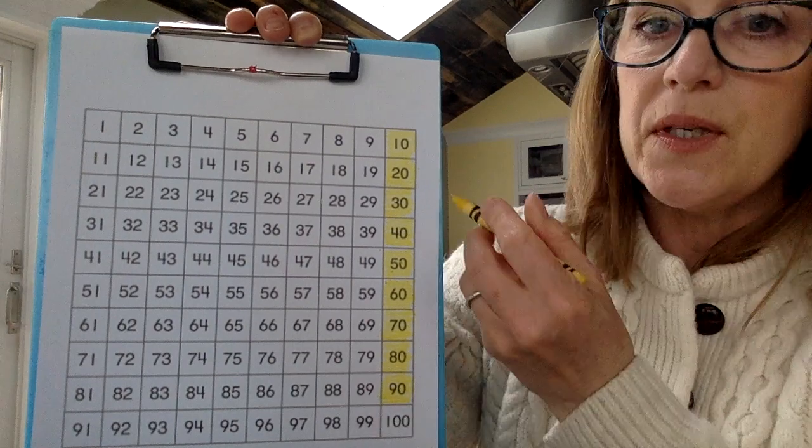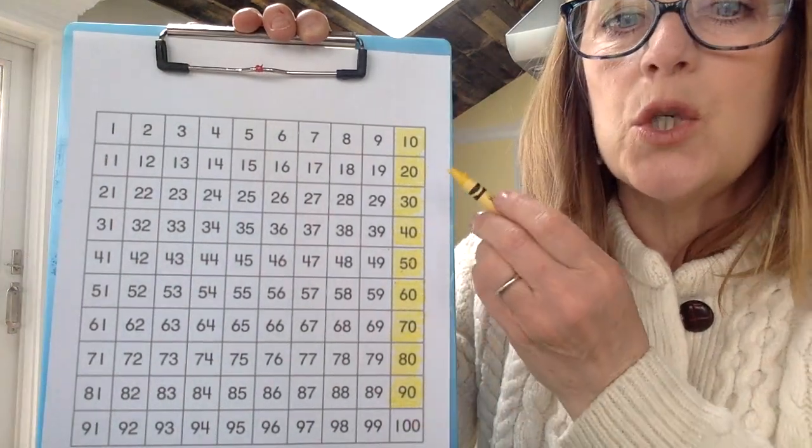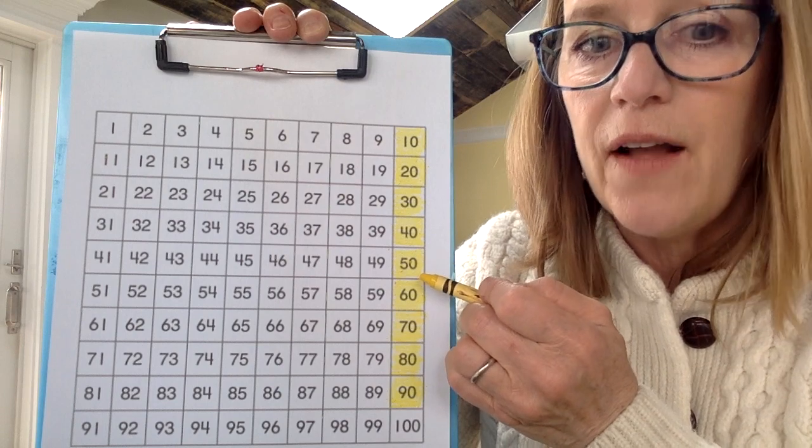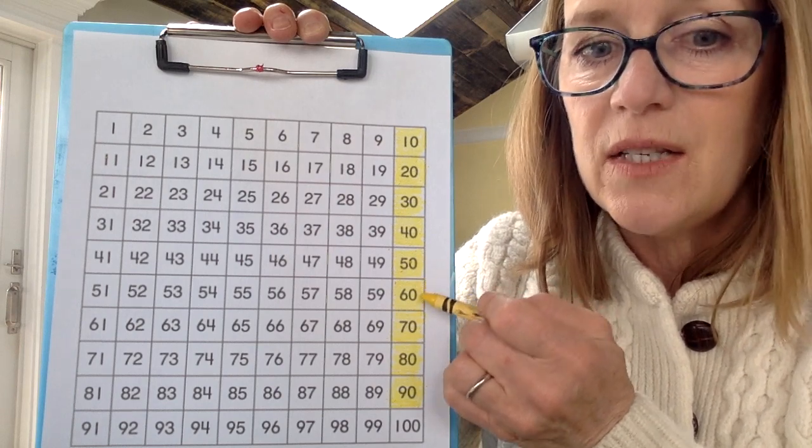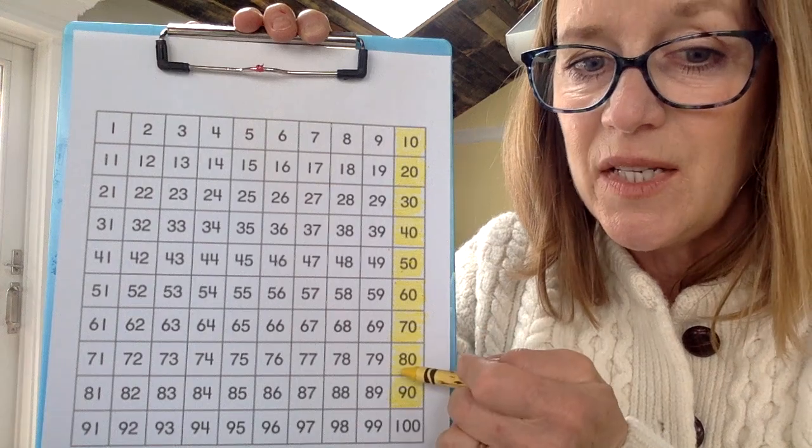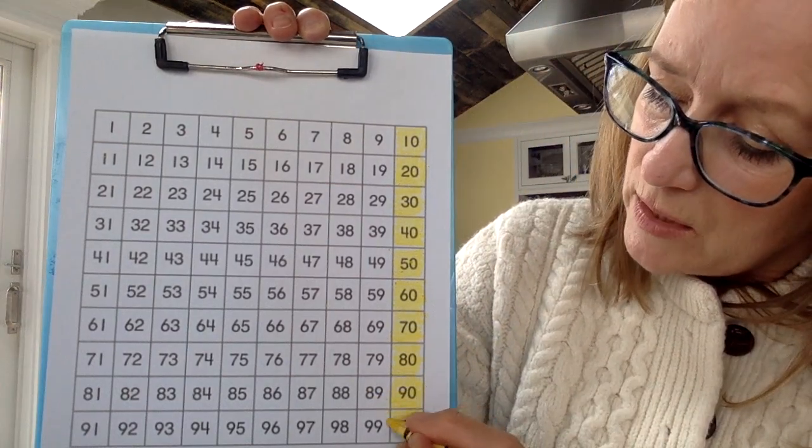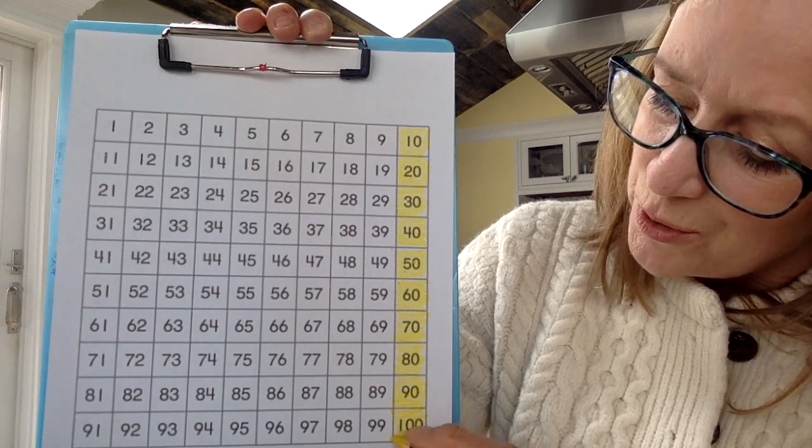And be careful when you're counting these numbers. Be careful these are not the numbers. It's twenty, thirty, forty, fifty, sixty, seventy, eighty, ninety. And then the last one in this collection is one hundred. Excellent.